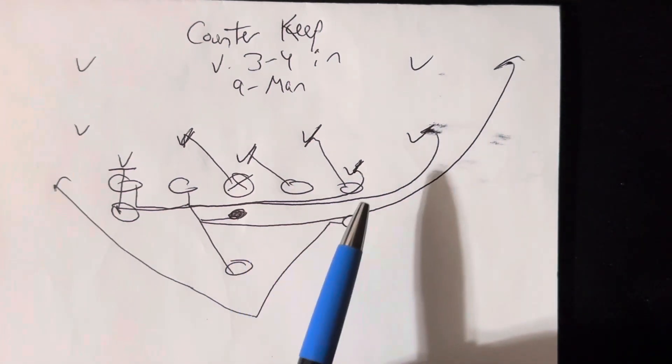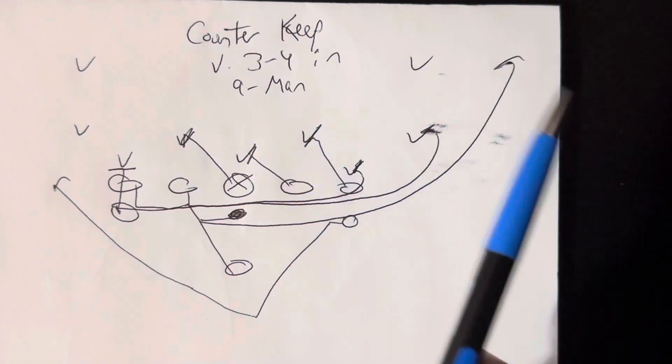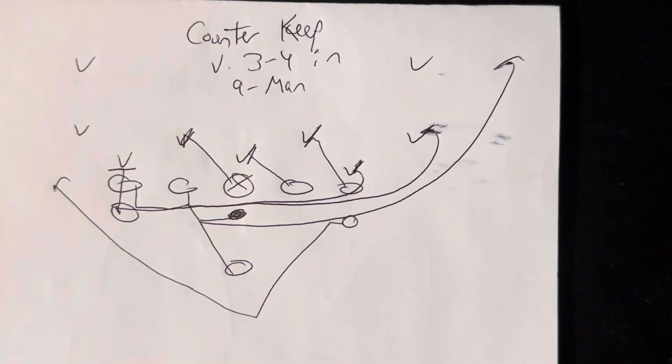Ideally, you want to be able to get number one and number two logged and the quarterback outside of that because they're in big trouble because all that's left is the safety who would have to come over the top to make the play. So that's counter-keep versus a 3-4 in nine-man football.